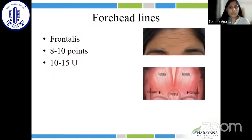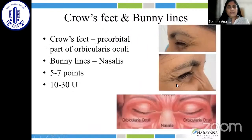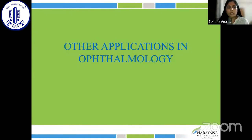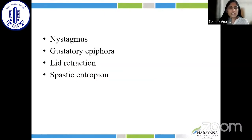Other functional indications include Meek syndrome and chemotarsorrhaphy. Facial indications include forehead lines — the frontalis muscle is targeted with 10 to 15 units over 8 to 10 points. The procerus and corrugators causing vertical lines and transverse rhytides (frown lines) are treated with 10 to 15 units over 5 to 7 points. Crow's feet are treated by injecting the preorbital orbicularis oculi, and bunny lines by injecting the nasalis — 10 to 30 units over 5 to 7 points. Other applications include paralytic squint, nystagmus, gustatory epiphora, lid retraction, and spastic entropion.